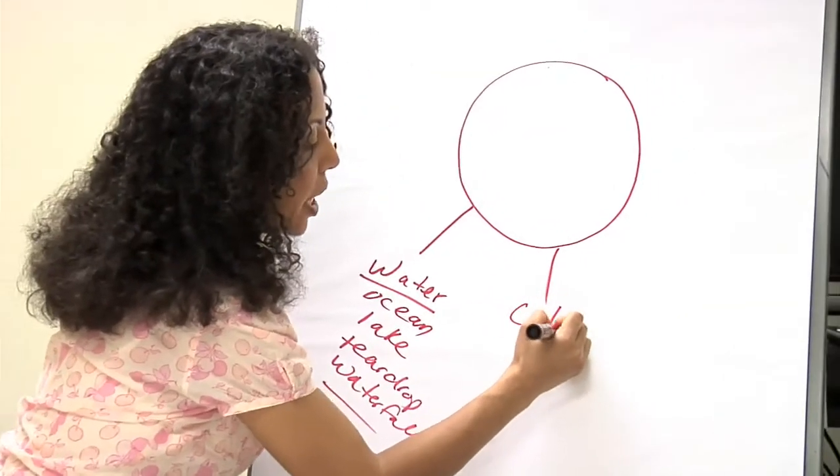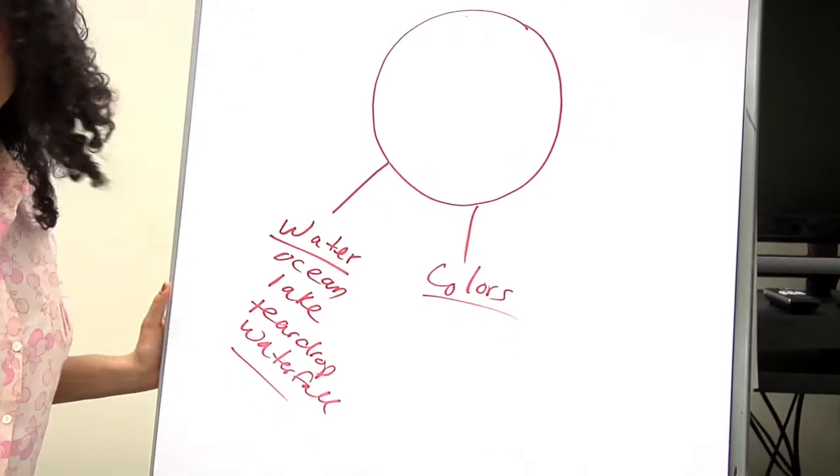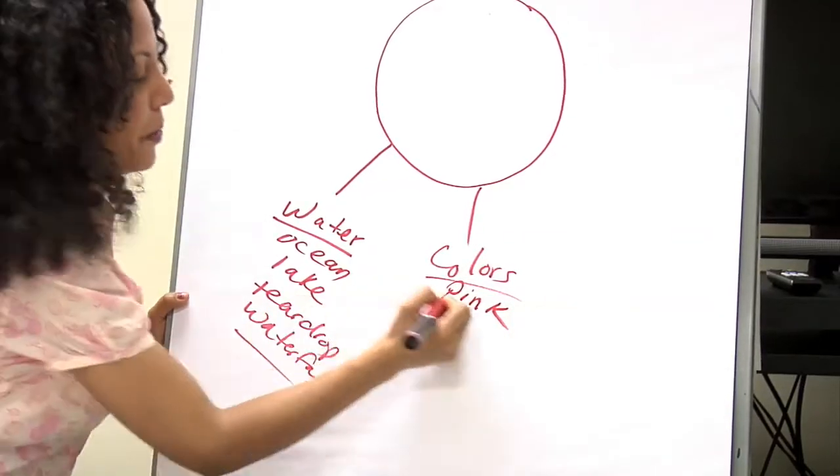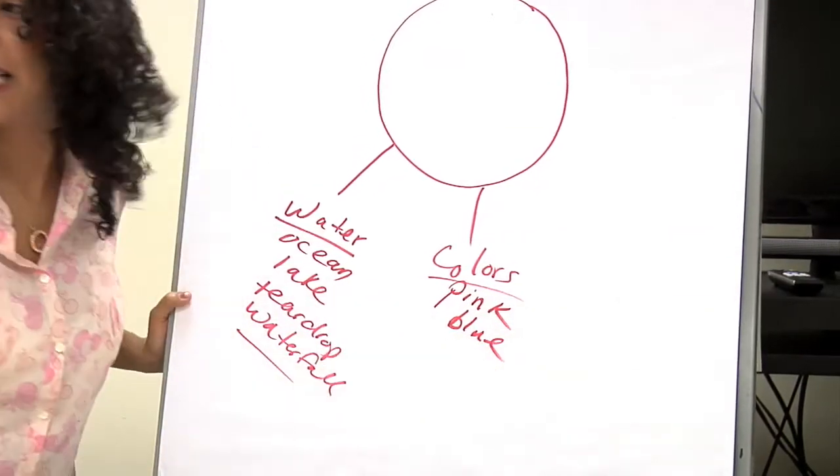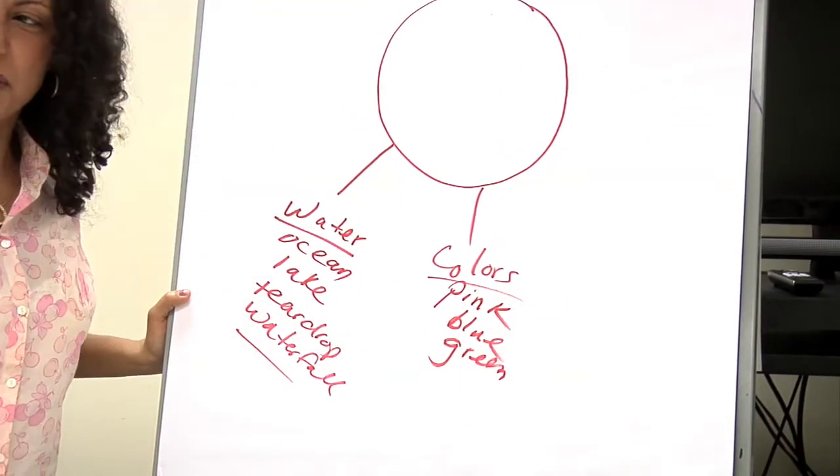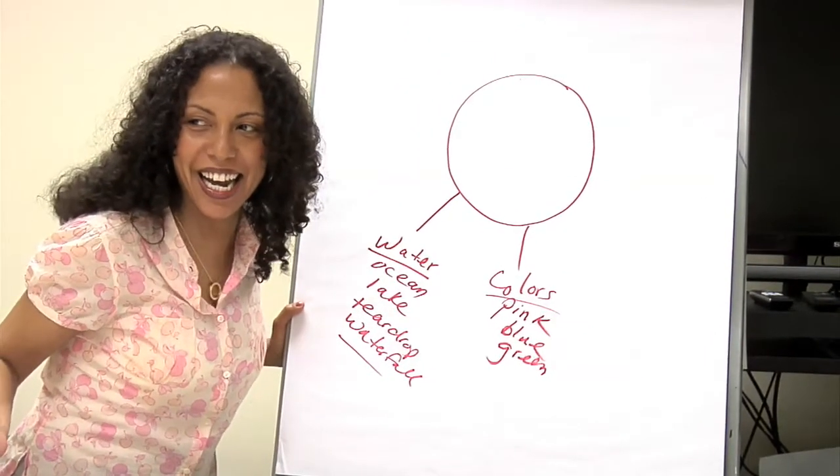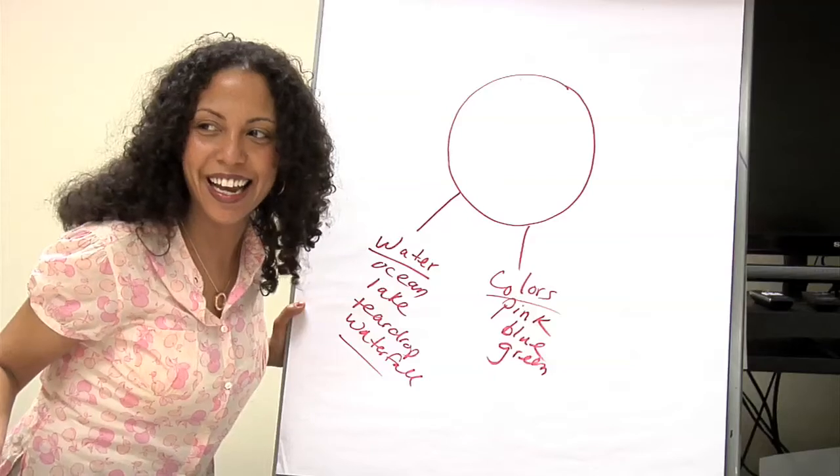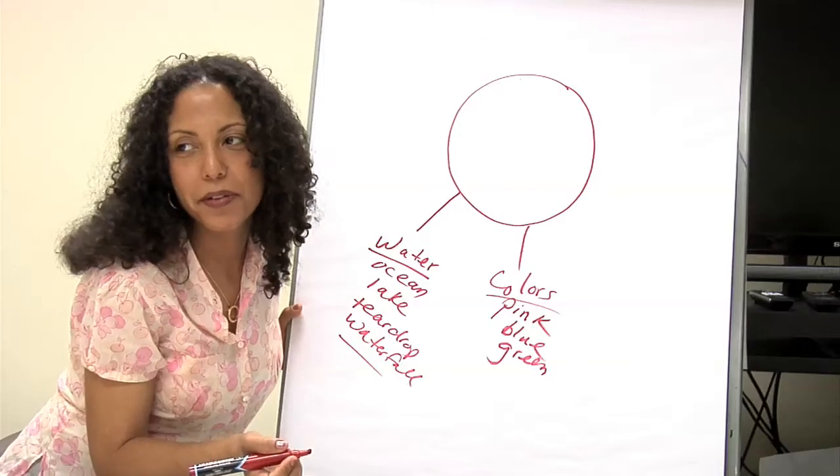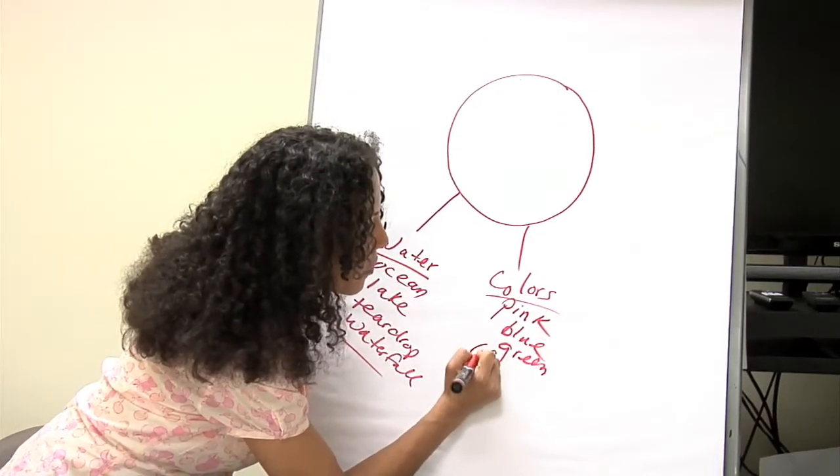And then we have colors. Because what would a poem be without colors? So what are your favorite colors? I love pink. Blue. Green. Now what kind of green? Like, vomit green? Forest green. Forest green. And you know I'm just kidding, right? About the vomit green. So we have forest green. I always use sense of humor when you're dealing with kids.